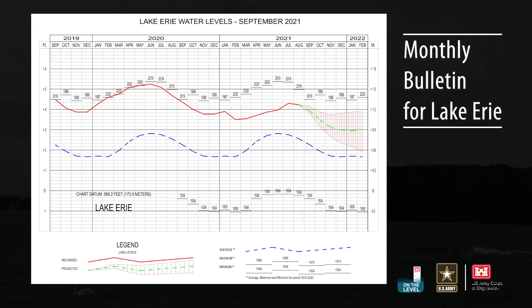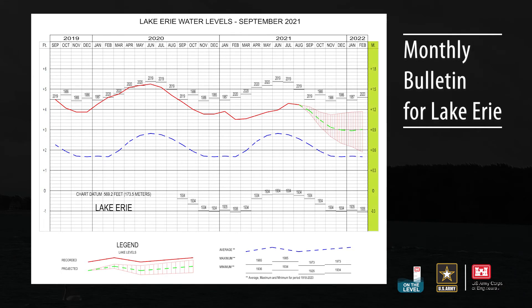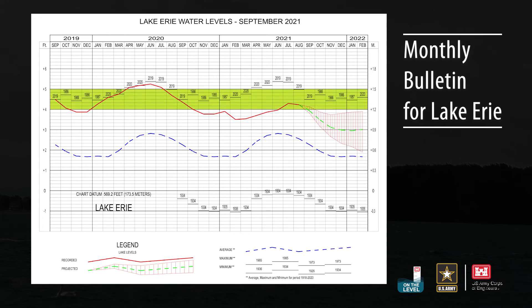The grid upon which the water levels are plotted has a scale in feet to the left and meters to the right. The major divisions are every 1 foot or 3 tenths of a meter, while the smaller divisions are every 2 inches or 5 centimeters.